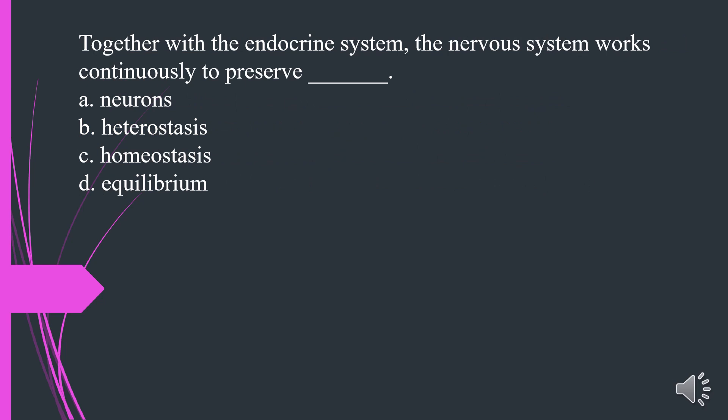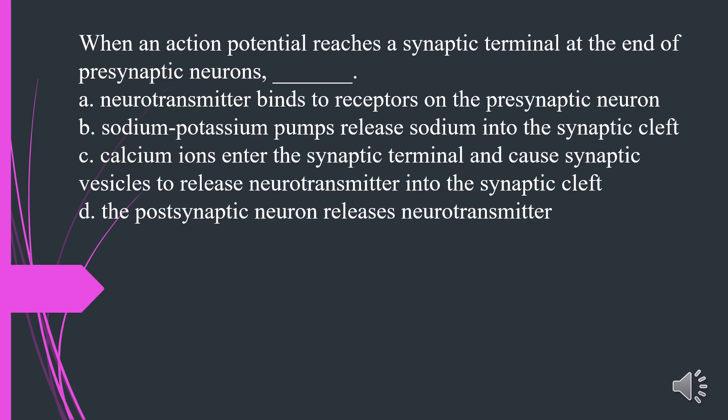Together with the endocrine system, the nervous system works continuously to preserve what? A. Neurons. B. Heterostasis. C. Homeostasis. D. Equilibrium. The answer is C. Homeostasis.